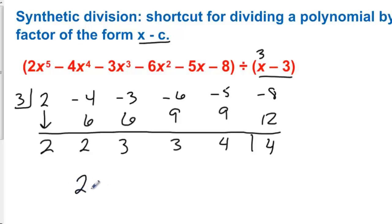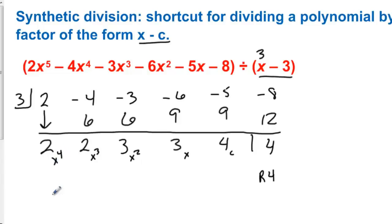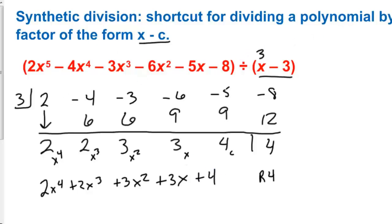Working backwards from the result: the last number is the remainder, so we have a remainder of 4. This is the constant, this is the x, this is x squared, this is x to the third, and this is x to the fourth. So we have 2x to the fourth plus 2x to the third plus 3x squared plus 3x plus 4. It makes sense that if we take an x to the fifth and divide by x to the first, it reduces the polynomial by 1, and what we have is an x to the fourth.